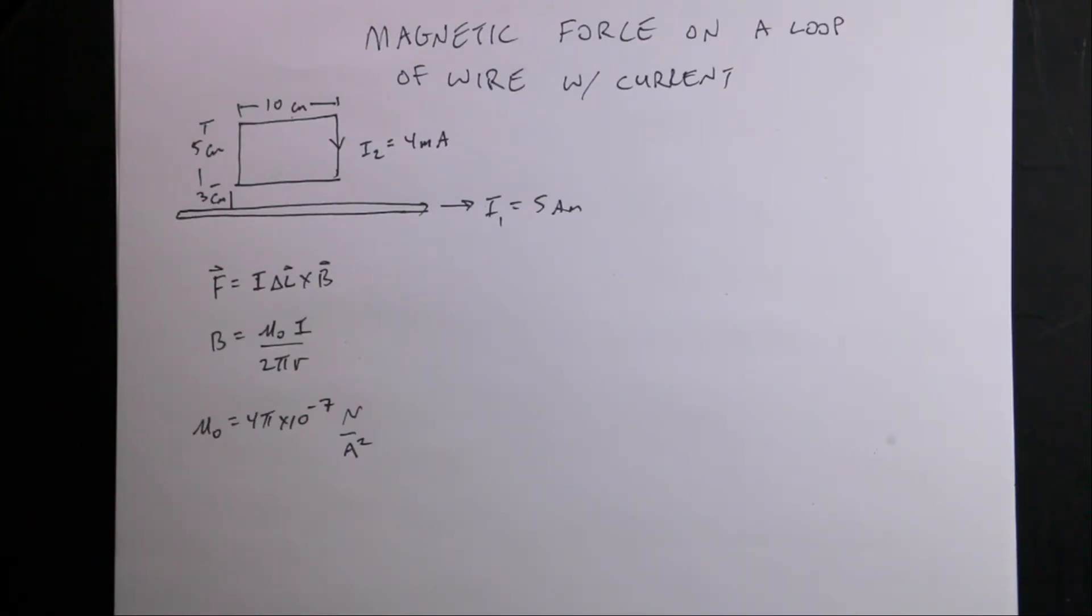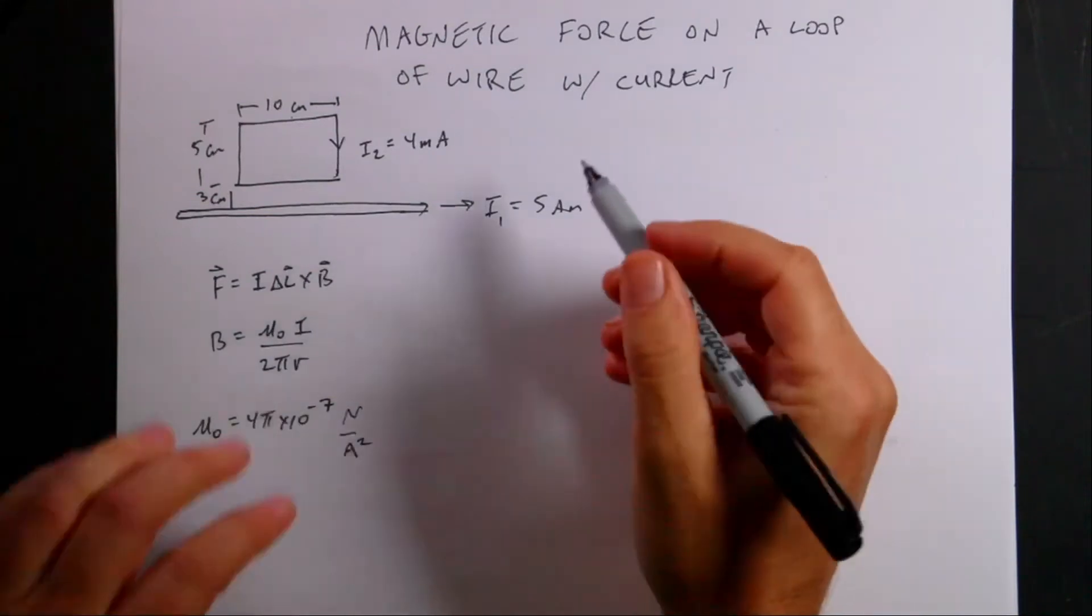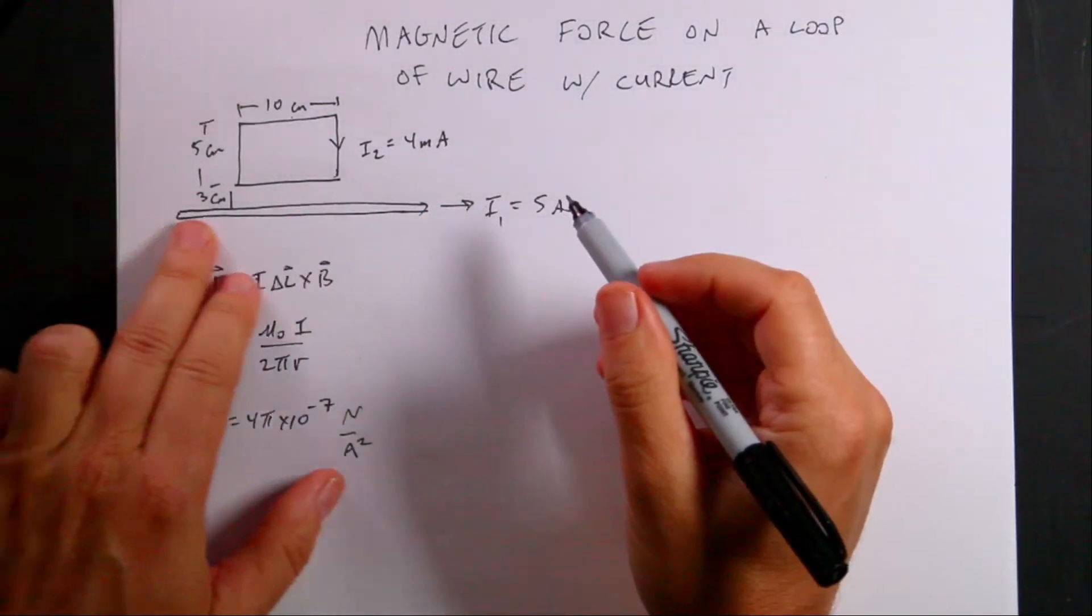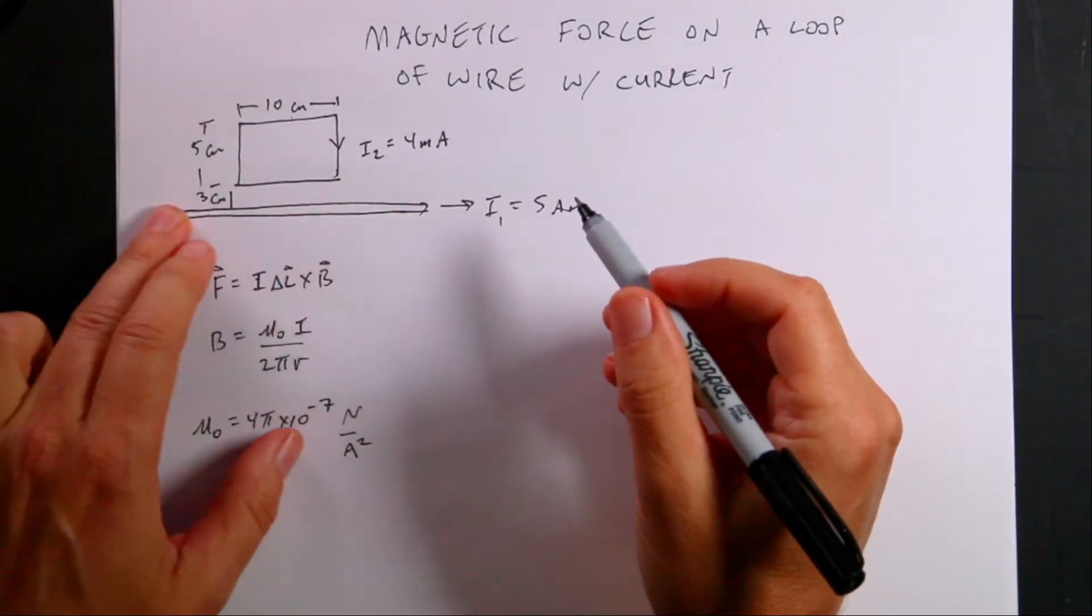I'll be honest, these are not simple problems because you really have to picture things in 3 dimensions. It's not so easy. So we're going to try to do this and let's start by thinking about the magnetic field due to this long wire.